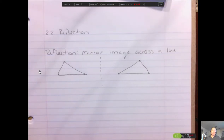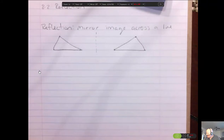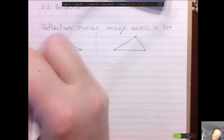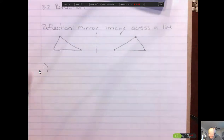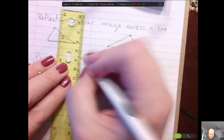The hardest part is probably understanding what line they want you to reflect over and what that does to the values. So let's look at an example.